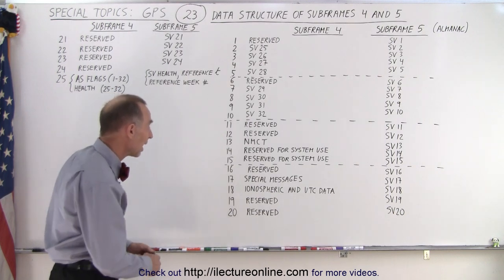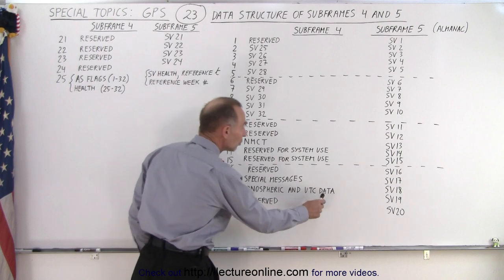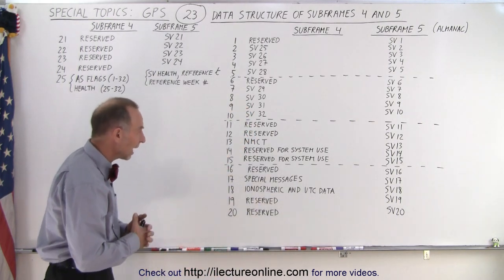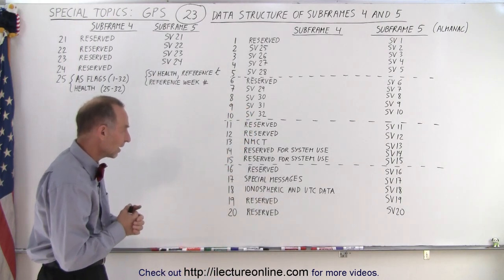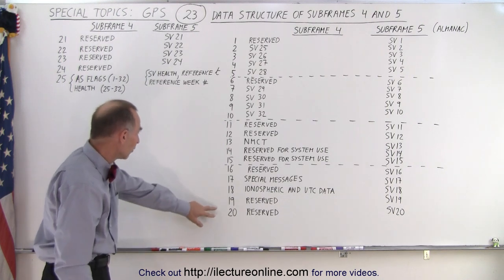And in 18, subframe 18, we have ionospheric and UTC data. This is for ionospheric corrections and corrections for the UTC time. Notice these are all reserved.